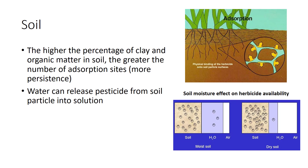The soil type influences pesticide persistence and leaching. The tendency for pesticides to be adsorbed varies with the amount of clay and organic matter in the soil. The higher the percentage of clay and organic matter in the soil, the greater the number of adsorption sites, and pesticides tend to stay longer in soils with high clay content and organic matter. The amount of water in the soil also affects the persistence of pesticides. When more water is added, it can release the pesticide from the soil particle and force it into solution.